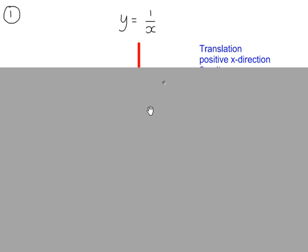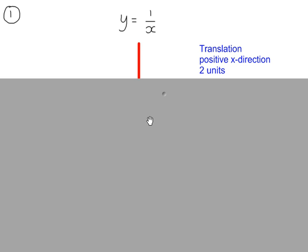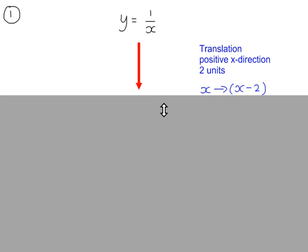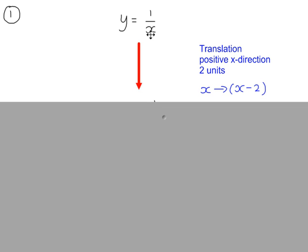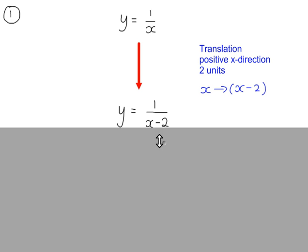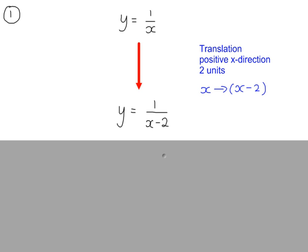The first transformation is a translation of two units in the positive x direction. So replace x in the original equation with x minus 2. So now we have this.